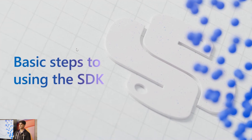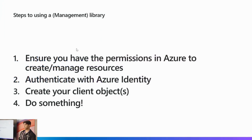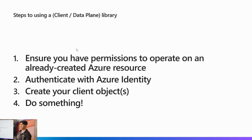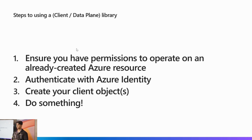Some basic steps to using the SDK. For management libraries, there are four major steps: first, ensure you have permissions to create and manage resources in Azure; second, verify your identity using the Azure Identity Library; third, create a client object to interact with Azure; and then you can do something. For data plane, it looks very similar — ensure you have permission to operate on already-created resources, such as being a data writer, data reader, or owner, then authenticate with Azure Identity, create your client object, and do something.